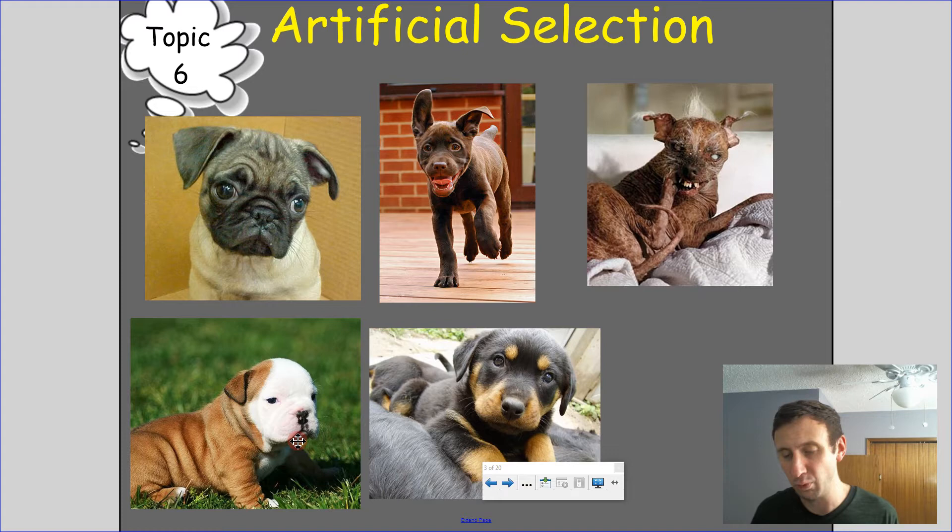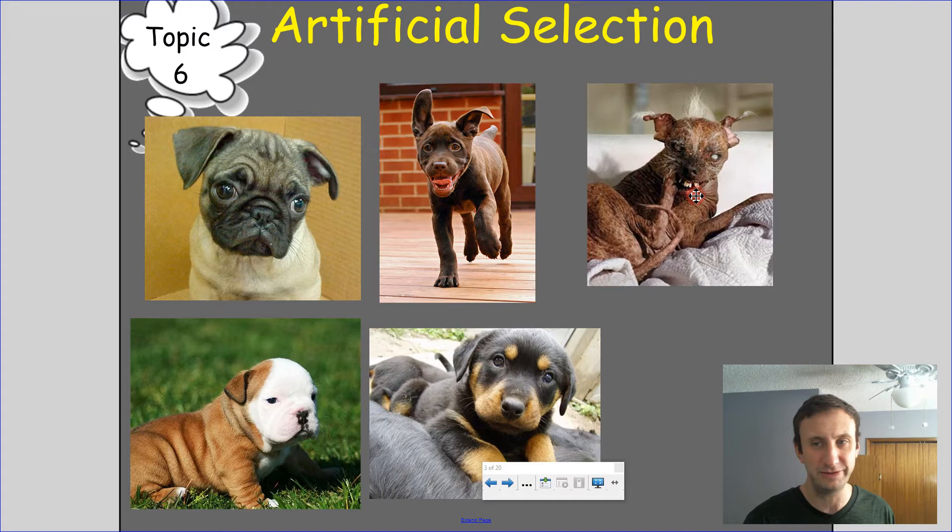Let's talk about dogs, for example. All dogs actually originally came from wolves — they're actually the same species. So whatever this dog is, it actually came originally from a wolf.